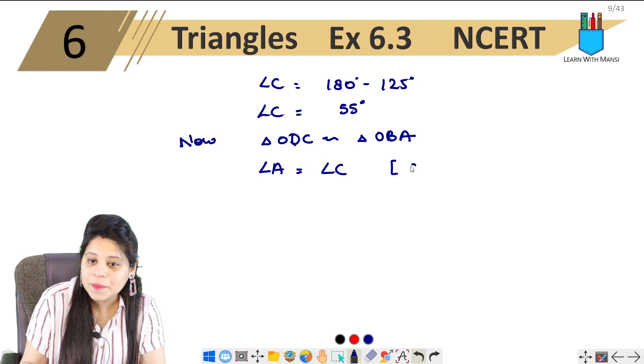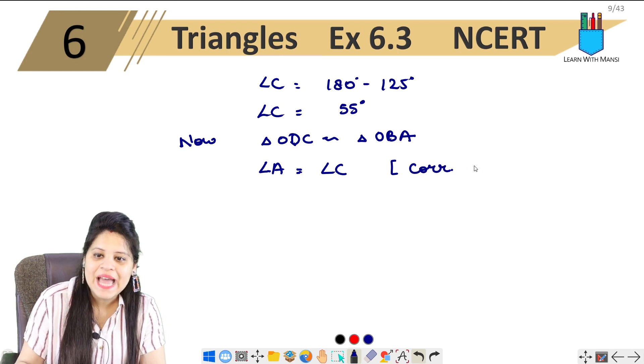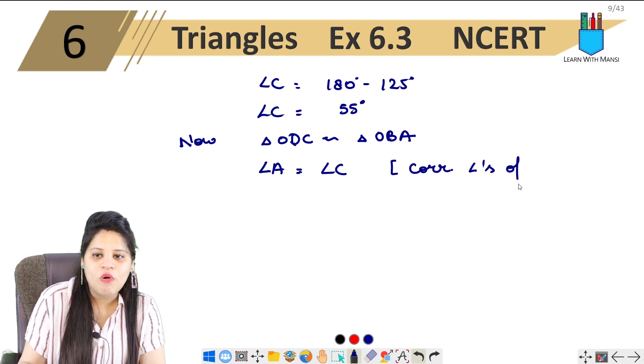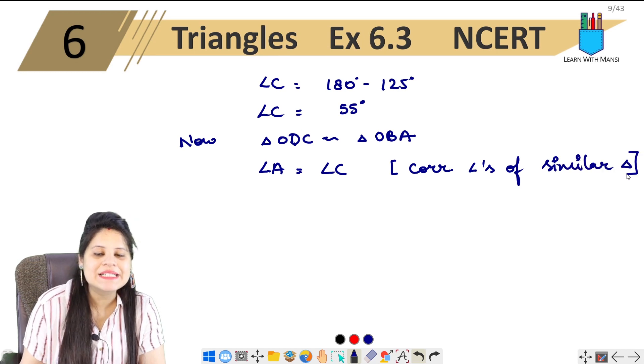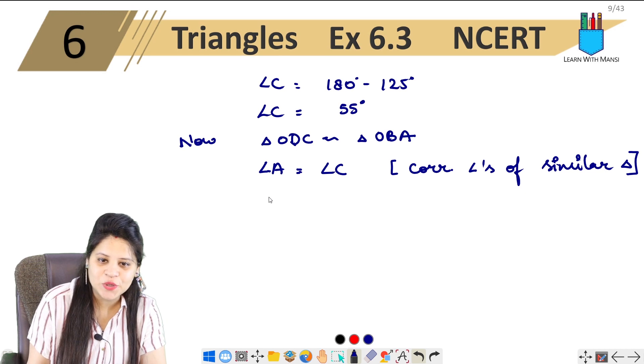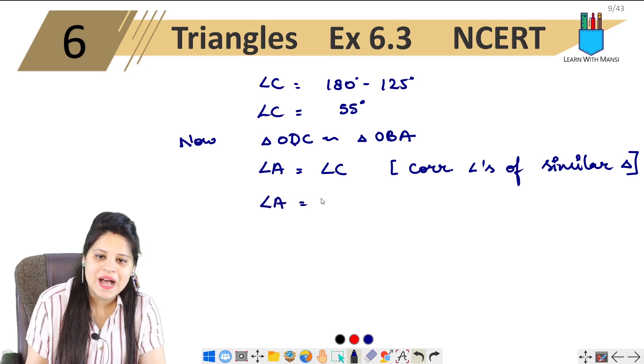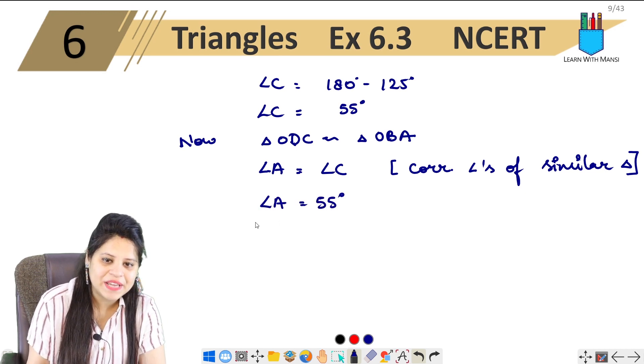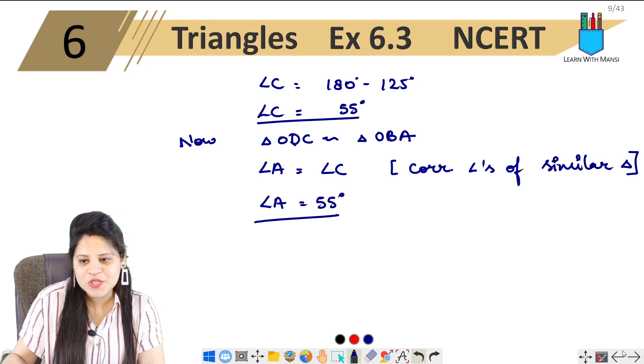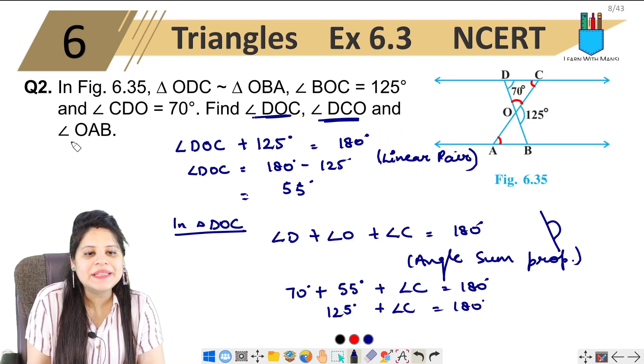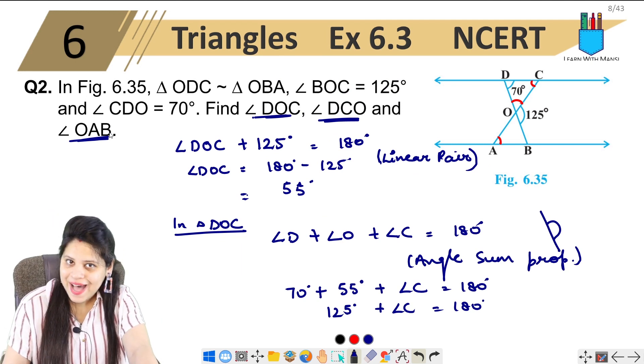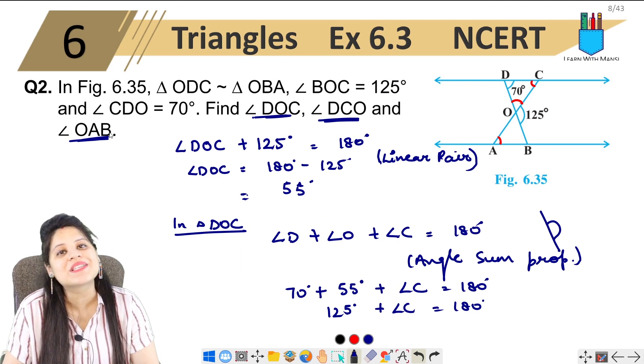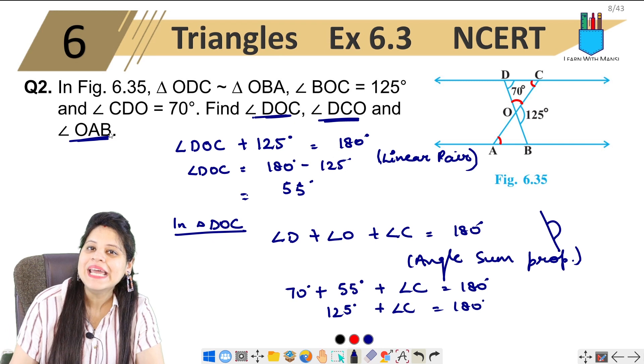Similar triangles' corresponding angles are always equal. So angle A equals 55 degrees. We had to find three angles, and all three angles are 55 degrees. This was question number 2 of exercise 6.3.